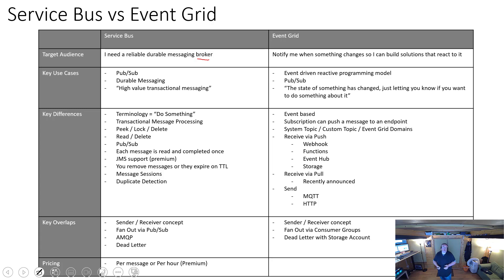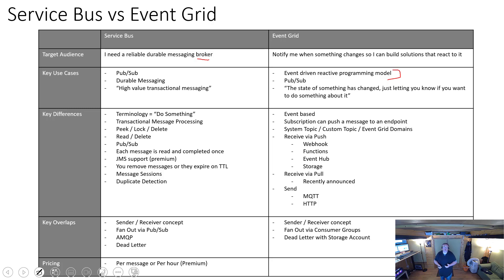With Event Grid we're really looking at event-driven reactive programming. One of the things that's similar between the two is you can implement publish-subscribe messaging with both of them. It's a little bit more advanced with Event Grid — with Service Bus you're really looking at properties on a message, whereas with Event Grid you can actually inspect the body data a little bit, so there's a subtle difference there.